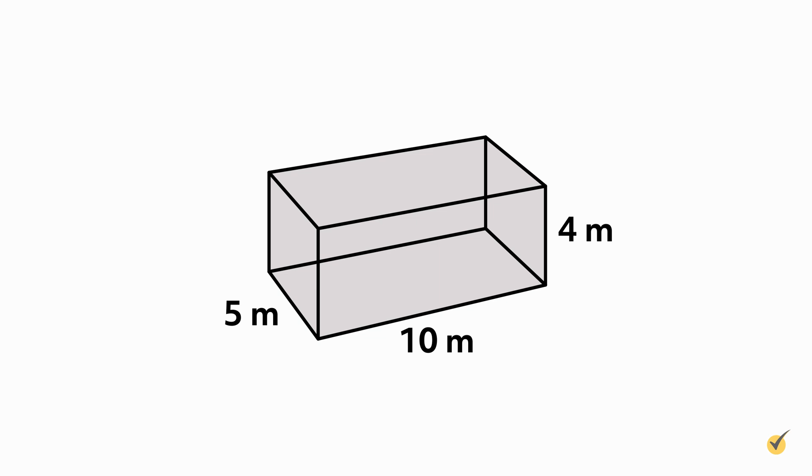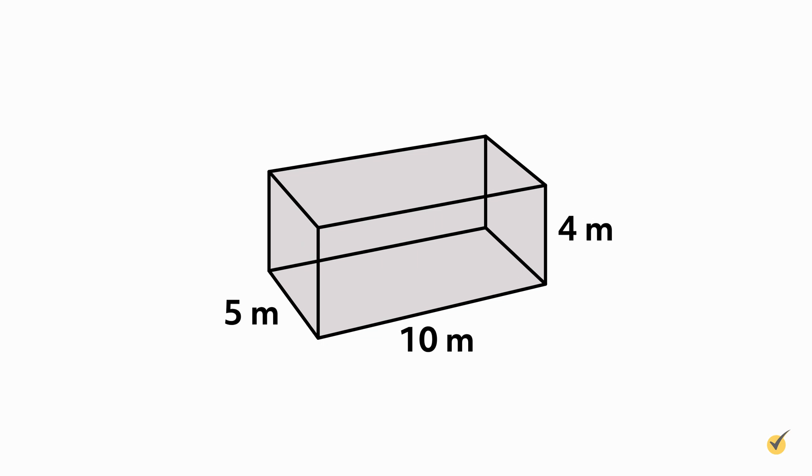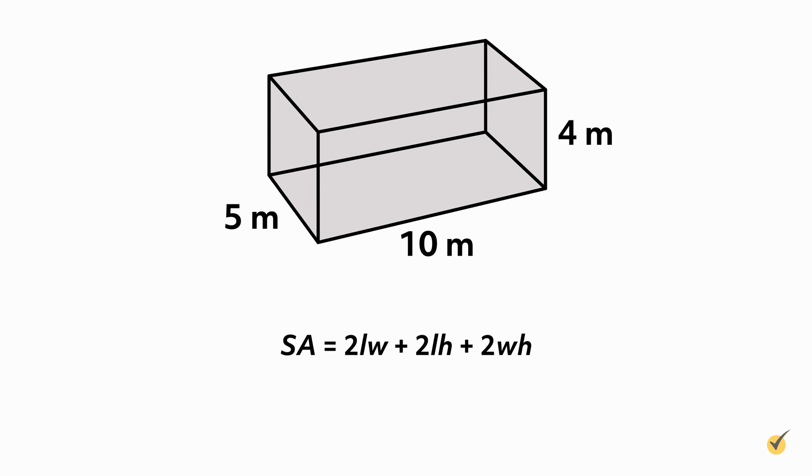The corresponding edges on the opposite sides will be the same since this is a rectangular prism. To find the surface area, I can use the surface area formula for rectangular prisms. Surface area is equal to 2 times length times width, plus 2 times length times height, plus 2 times width times height.